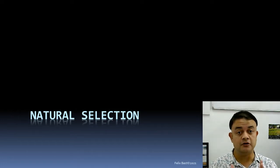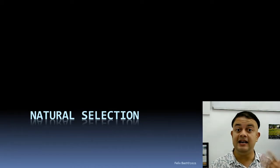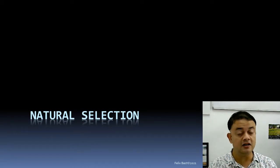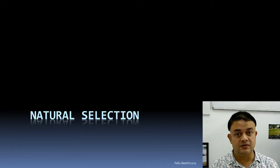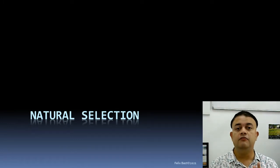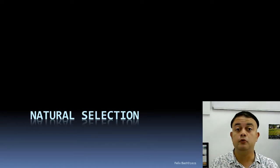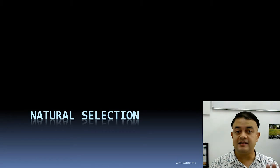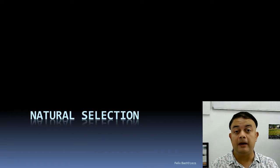Natural selection has been conceived independently by more than one person. Darwin is now credited, but both Charles Darwin and Alfred Russel Wallace are credited for the discovery of natural selection. We tend to attribute more credit to Darwin because he amassed a lot of proof for it. Meanwhile, Alfred Russel Wallace, who was a biogeographer, was on a field trip.